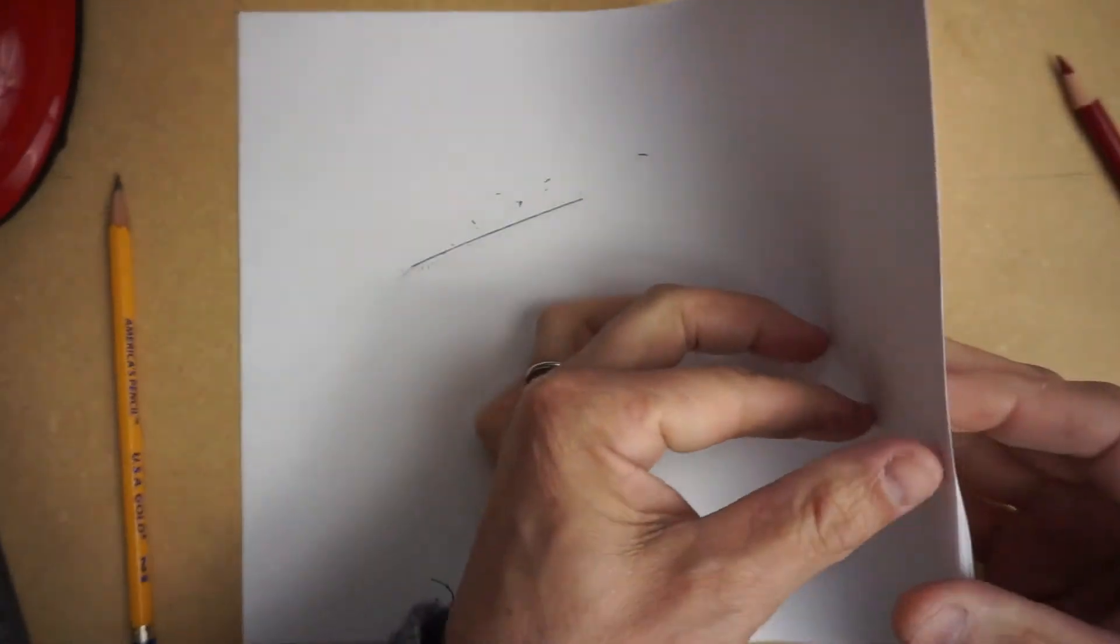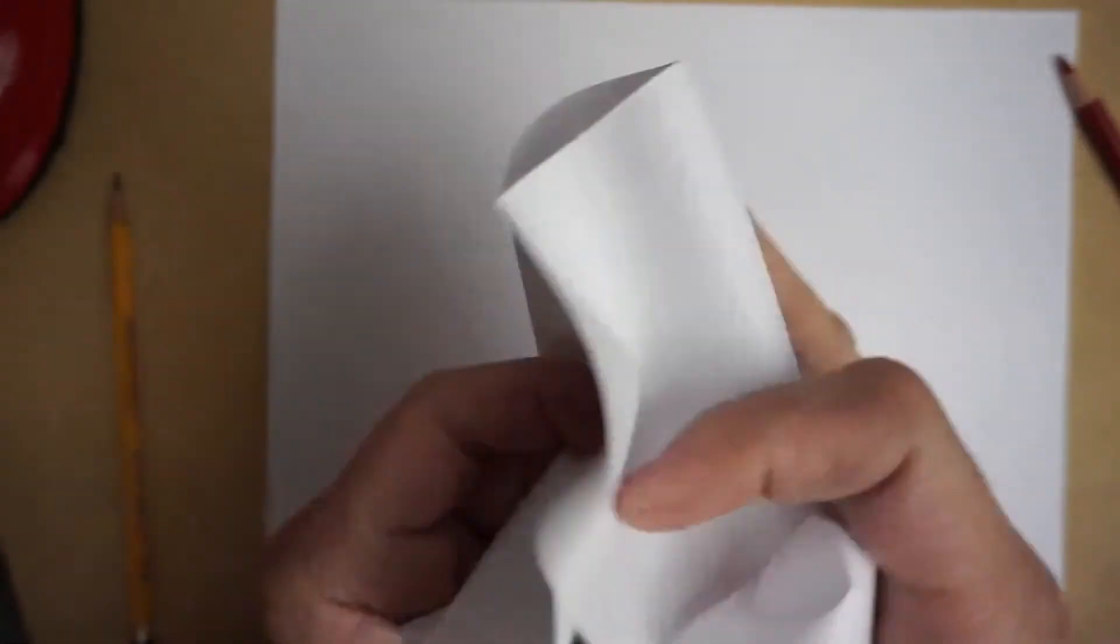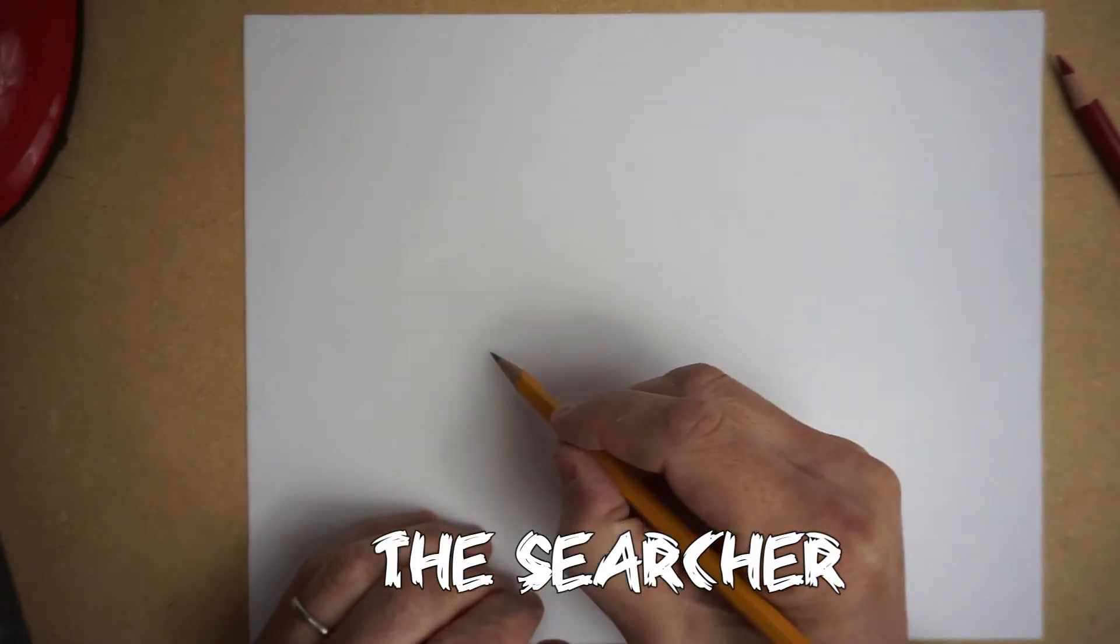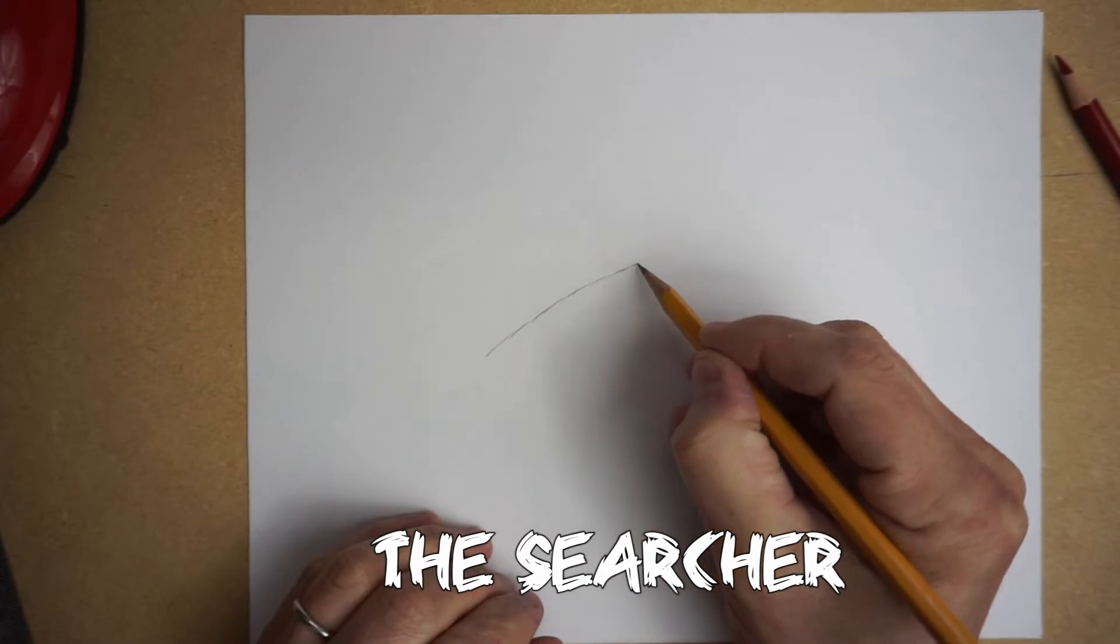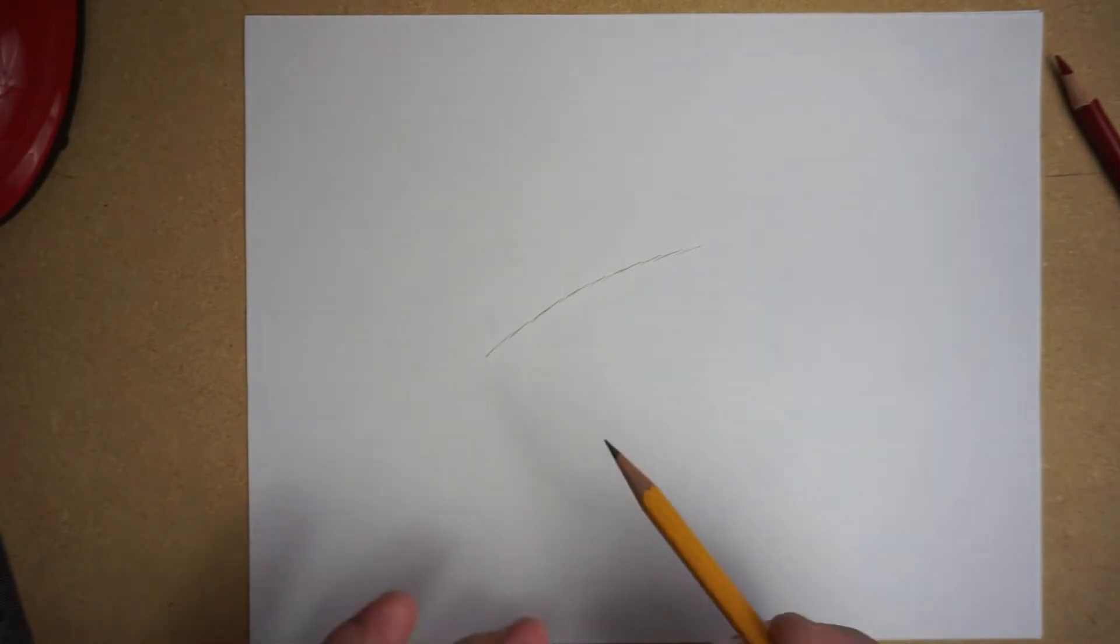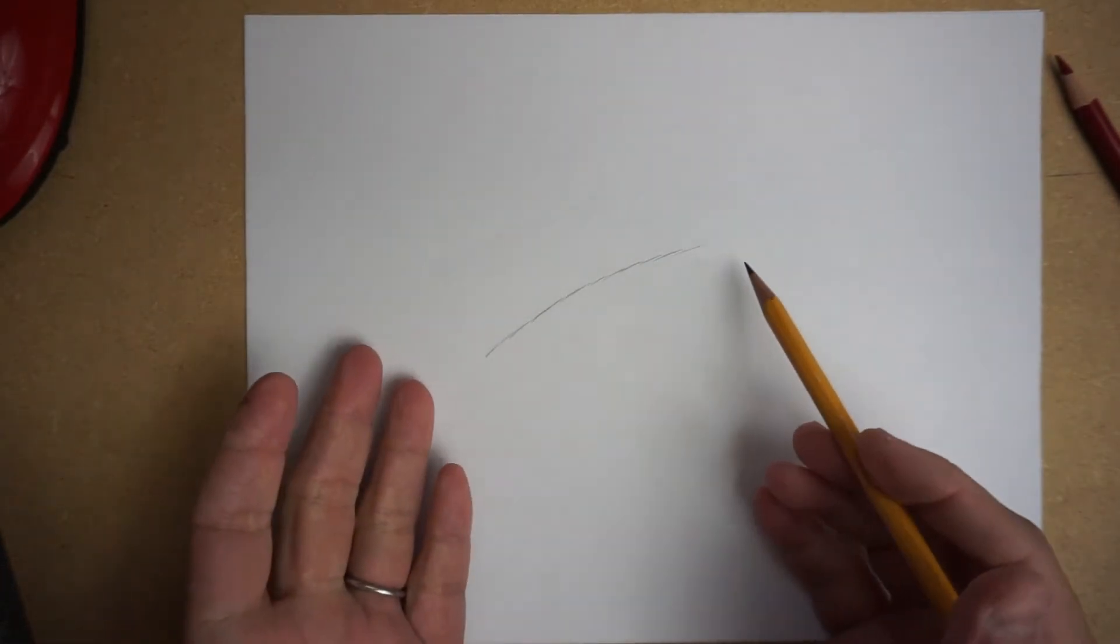So what ends up happening is the next type of line drawer I recognize is the searcher. So this is somebody who will draw like this, and in a way that's really good because at least they're drawing very lightly so it's pretty easy to erase.